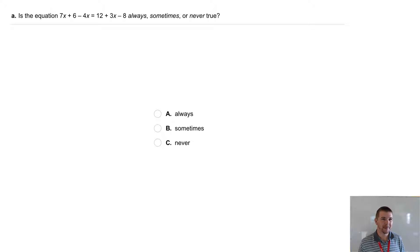Your turn. Part A. Is the equation 7x plus 6 minus 4x equals 12 plus 3x minus 8 always, sometimes, or never true?